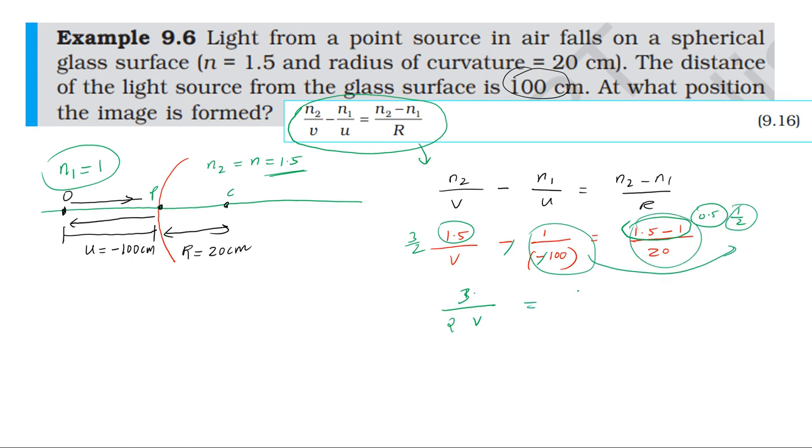So 1 by 20 equals 1.5 by v minus 1 by 100.